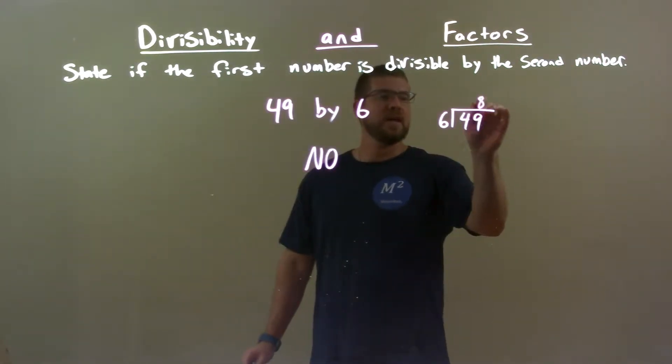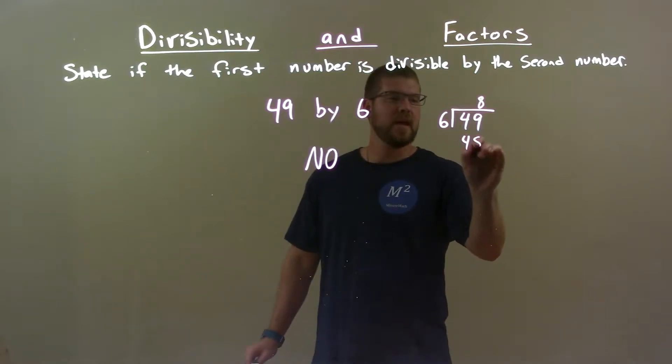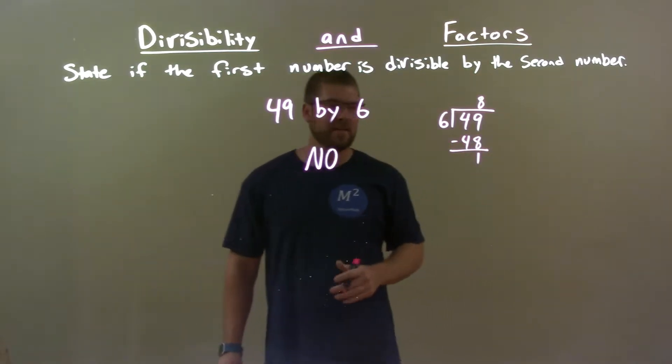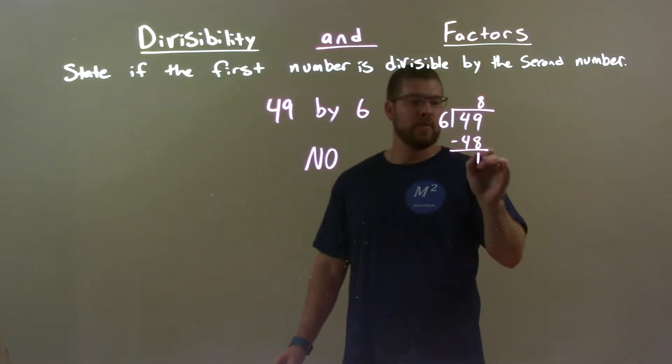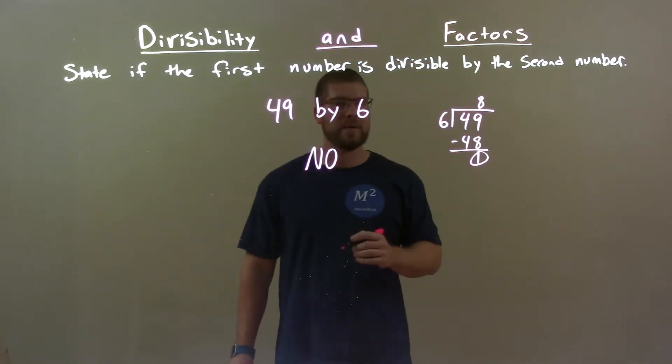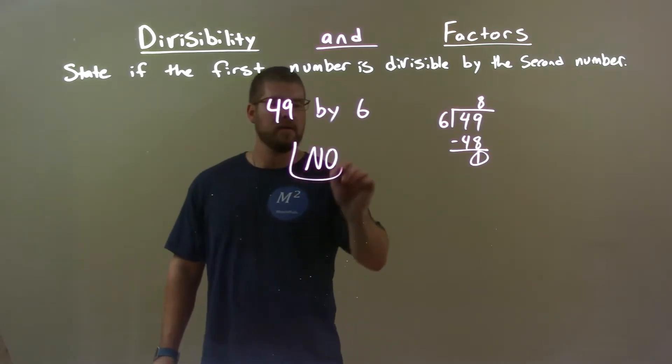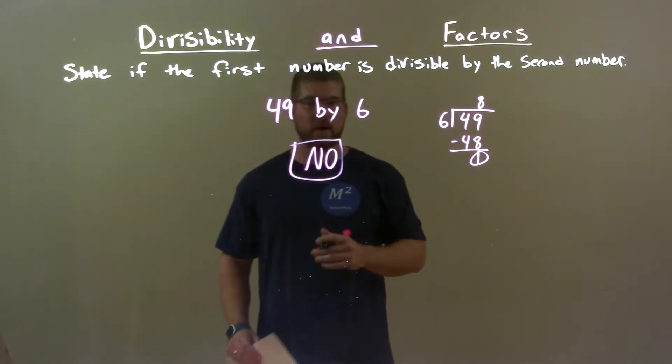So, if we have 8 here, 6 times 8 is 48. We have 1 remainder, and that shows with that remainder here, that does not go in evenly. So, 6 does not go into 49, and so, no is our final answer.